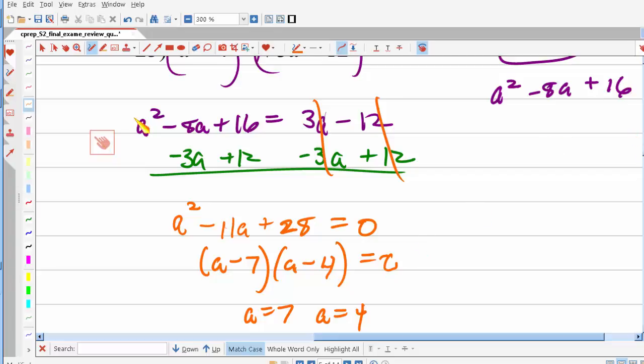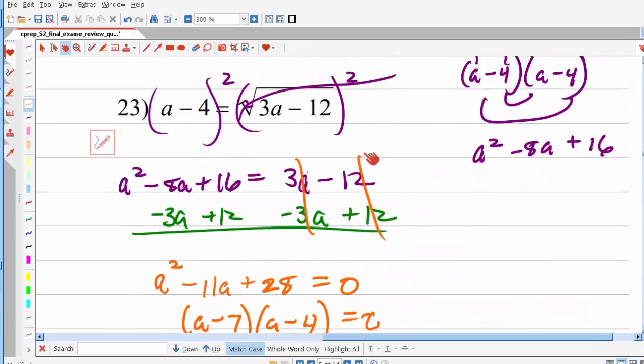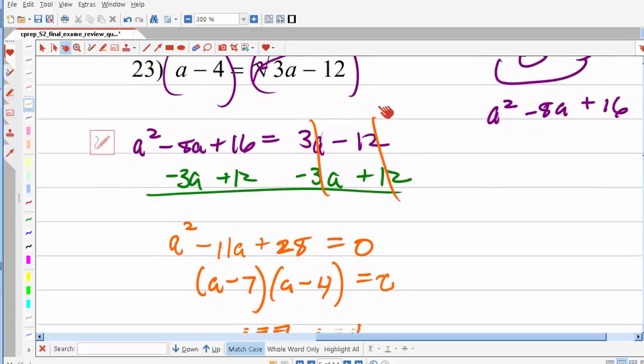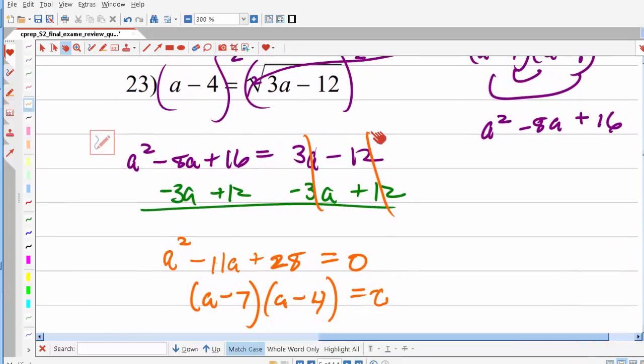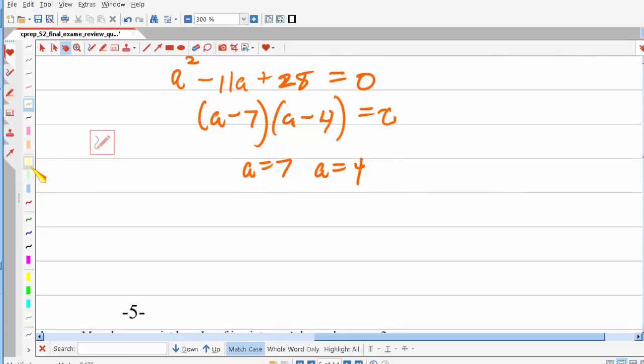Now once you get your solutions, you need to make sure that neither of them are extraneous. They're gonna be extraneous if when you put them into the original equation, you get a negative under a radical. So if I put 7 in for a, I get 21 minus 12, that's positive, so that's fine. When I put 4 in, I get 12 minus 12, that's 0, so I can take the square root of 0, so that's fine as well. So that means neither of these are extraneous and both of them are my solution.